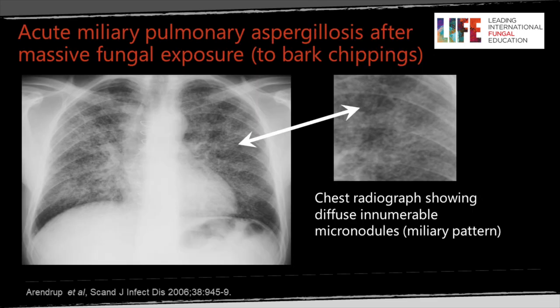This is a slightly unusual presentation of a patient who had massive exposure to fungal organisms due to working with bark chippings — they breathed in large amounts of Aspergillus and there are numerous nodules scattered through the lungs. However, on CT the distribution is more airways-related — this isn't the typical random pattern we've seen on the CT scans.